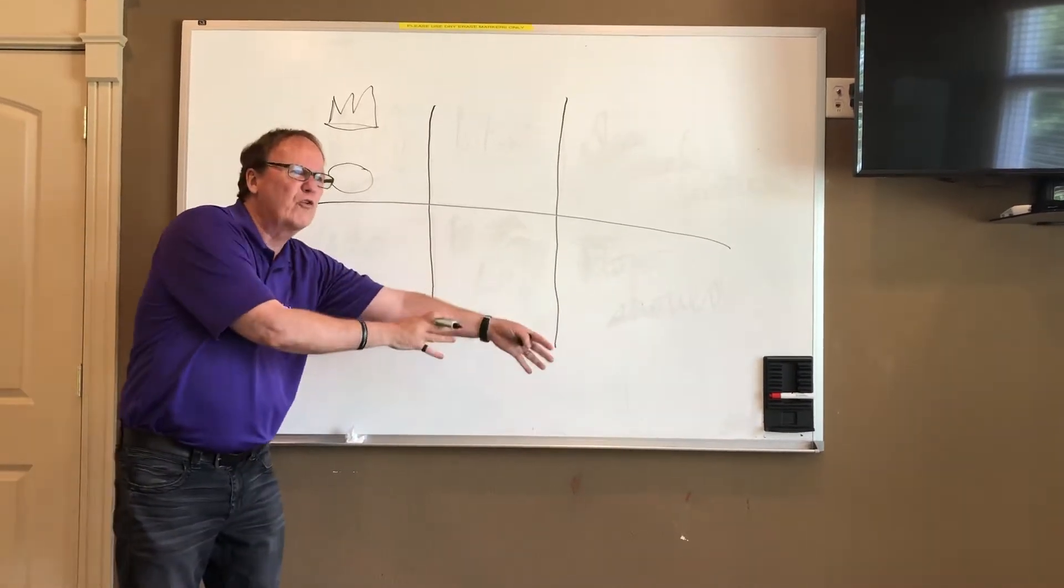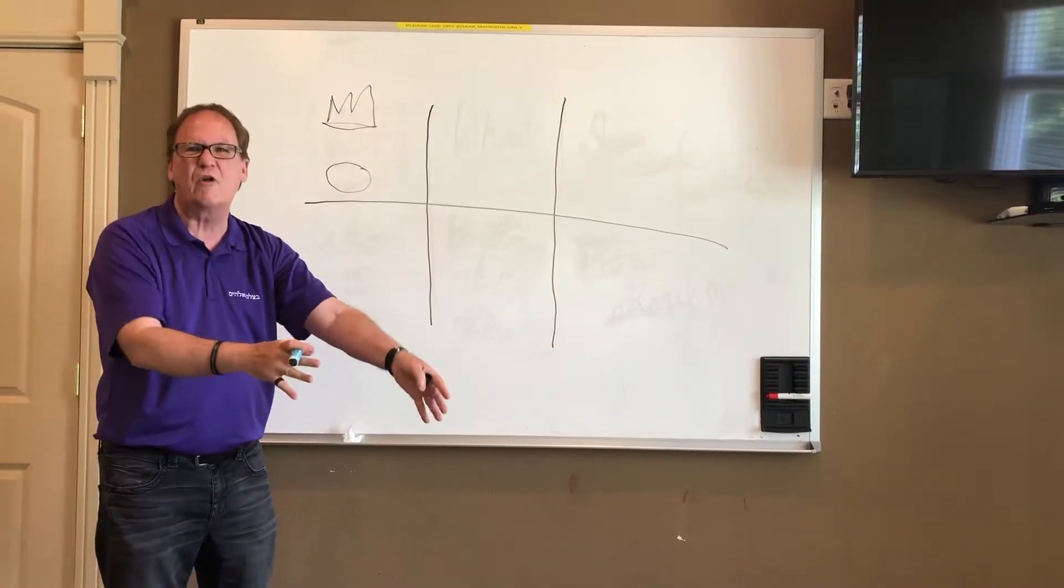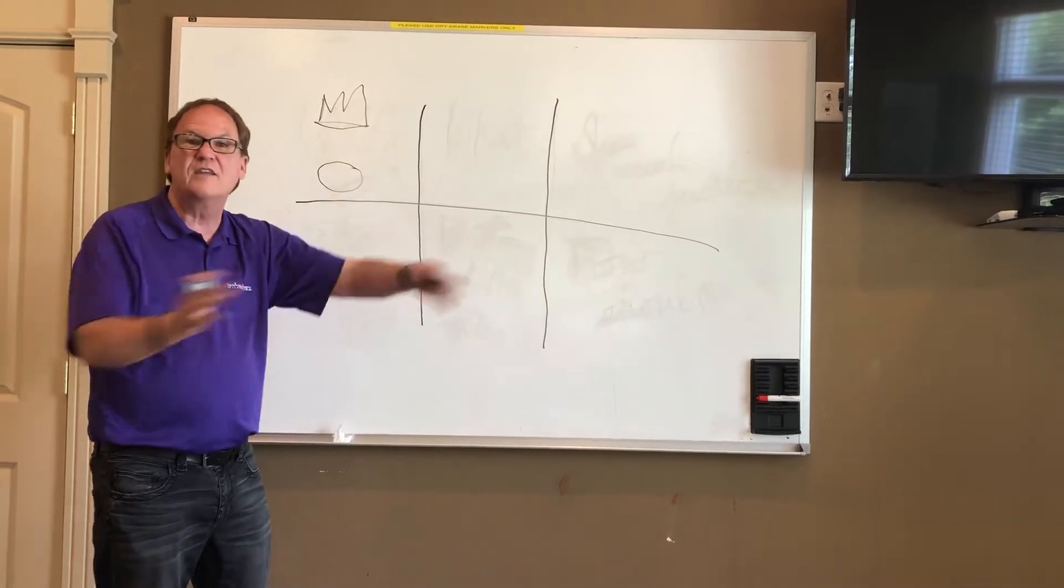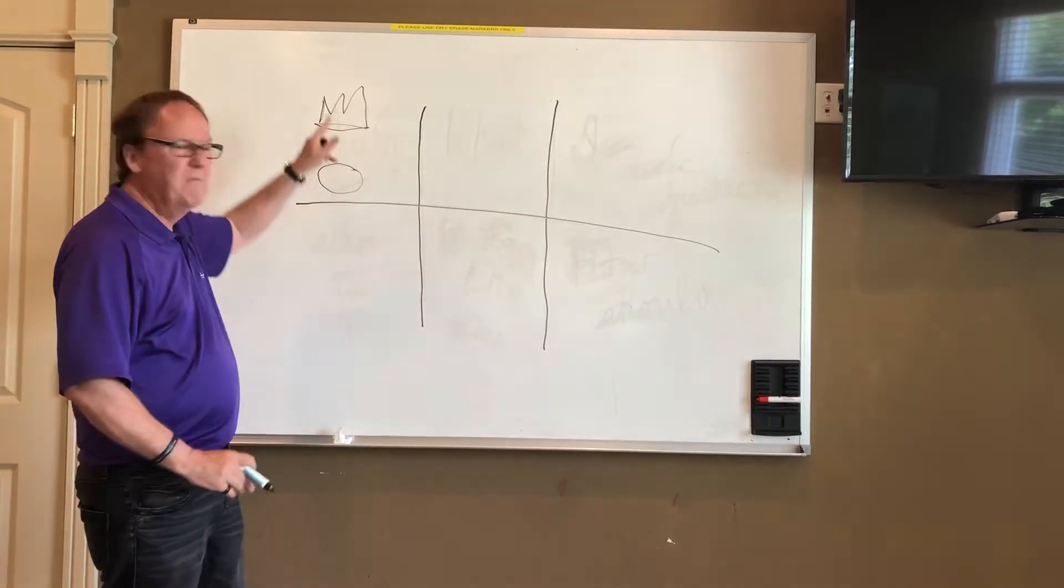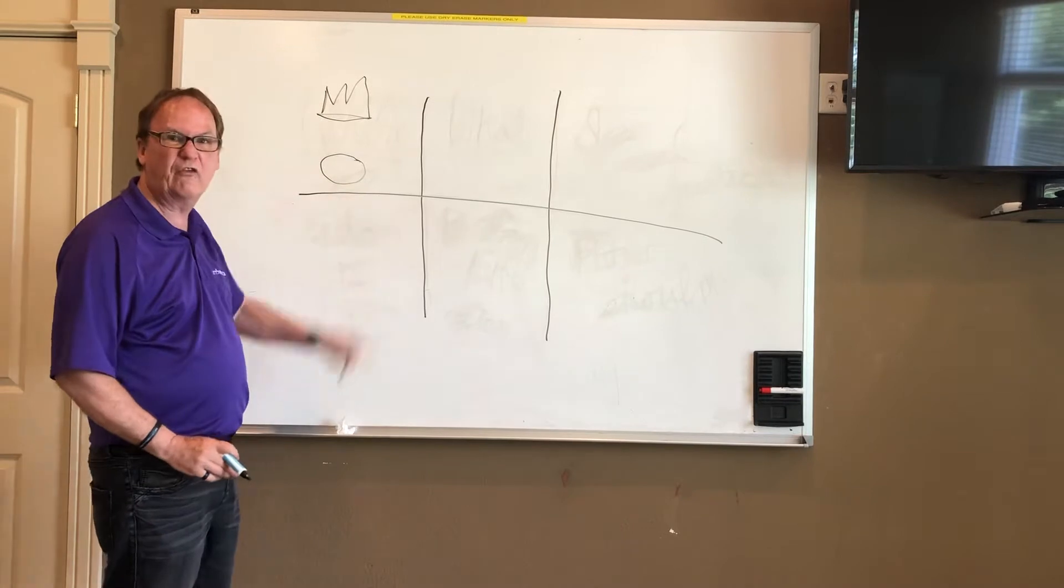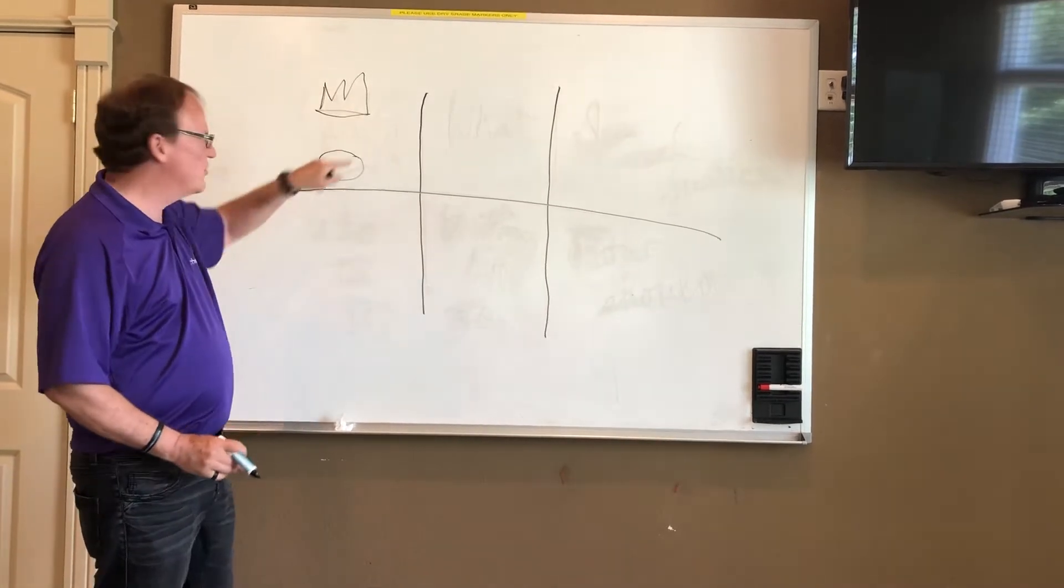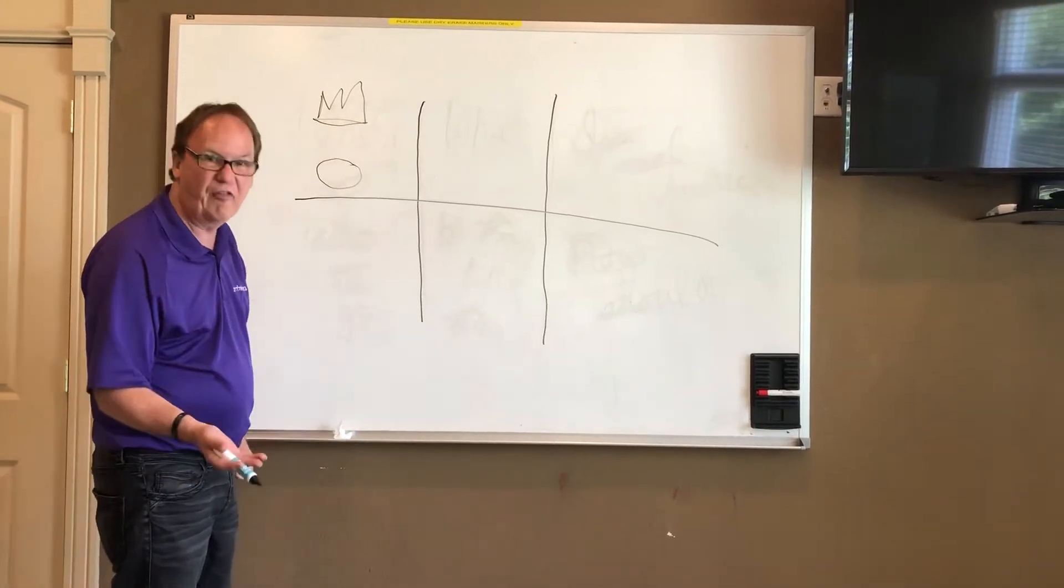There are people that are old earth creationists. There are people that are young earth creationists. There are people that have all kinds of different views on that continuum. Big picture is there is a God. There is a creation. God's outside of his creation and he's spoken into existence out of nothing.